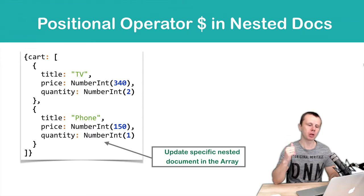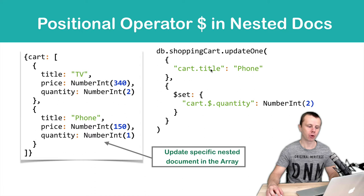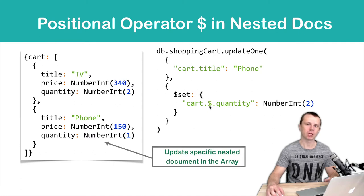Here is an example. We are looking for a document where cart.title is 'phone'. Cart is an array and title is a field of the nested documents. In this query we are looking for a sub-document that has the title field 'phone'. When this field is found, the dollar sign positional operator will dynamically point to the index of that sub-document — in our case, index 1. TV is at index 0 and phone is at index 1.